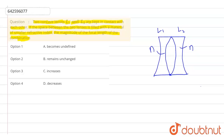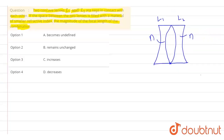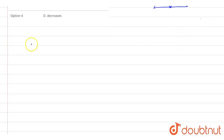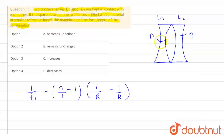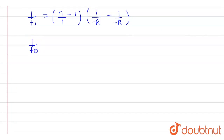Let's calculate the focal length when the material is not filled. For lens L1, 1/f1 = (n/1 − 1) × (1/R − 1/R). This surface is bulging in so R is negative, while this surface is bulging out so R is positive. Doing this, 1/f1 = −(2/R)(n − 1). Call this equation 1.